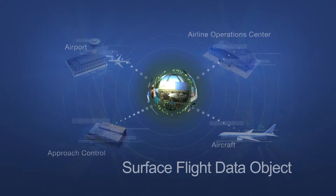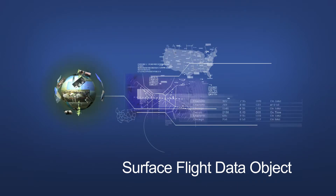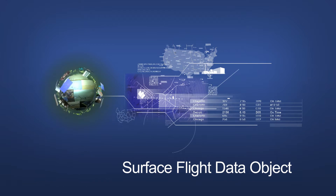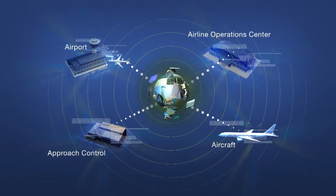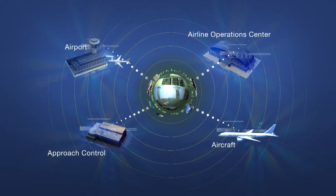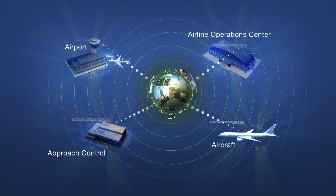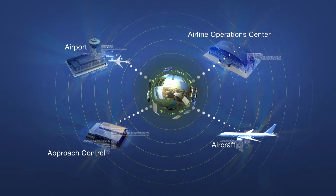Surface flight data objects are assigned when the airline files flight plans. Optimal pushback times, runway assignments and taxi routes are calculated, and controllers sign off on the recommendations. The information goes into the surface flight data object, which connects to FAA and airline systems. Pilots get the information through a data communications uplink.